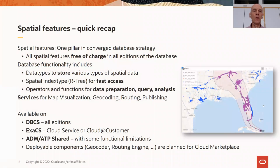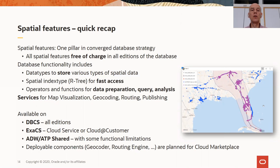Let me do a quick recap of the spatial features so everyone is on the same page. For those who haven't noticed: in December of last year, we made all spatial features available free of charge with all editions of the database as part of our converged database strategy. The same applies to advanced analytics and graph features. For the spatial part, you have a data type to store various types of spatial data: point data, lines, line strings, areas, three-dimensional objects, road networks, and geo-referenced raster images like satellite images.